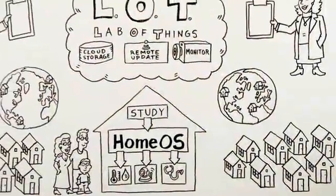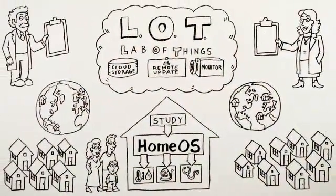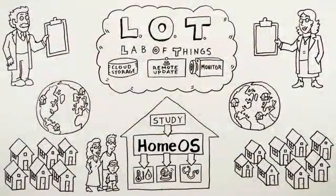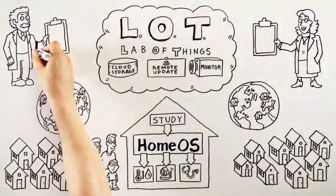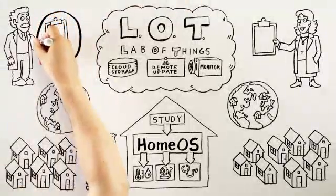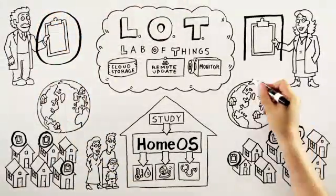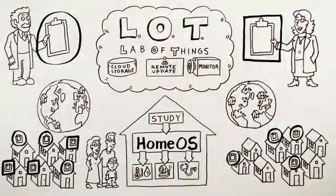Marie realizes that she and Albert have recruited similar participants in different locations. Because they are both using Lab of Things, Albert can deploy his study into houses Marie has recruited, and Marie can deploy her study into some of Albert's houses.